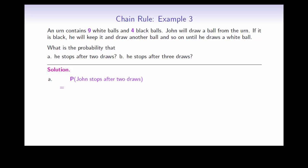If John stops after 2 draws, that means that the first ball must have been black, and the second one must have been white. In other words, we should use conditional probability. The first ball is black multiplied by the second ball being white given that the first one was black.